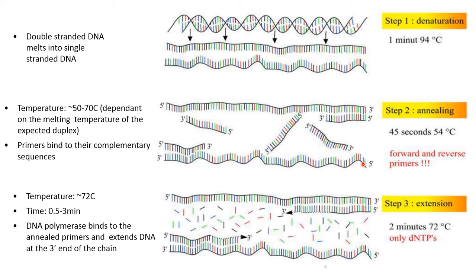During annealing, both the forward and reverse primers bind to the complementary sequence of the single-stranded DNA. The primer binds to the single-stranded DNA at a temperature of around 50 to 70 degrees centigrade for 45 seconds, with the range varying according to the sample.